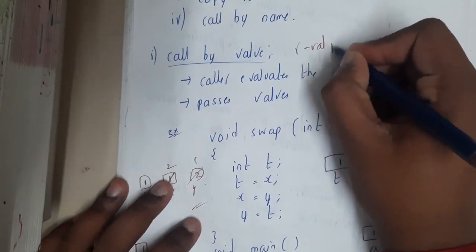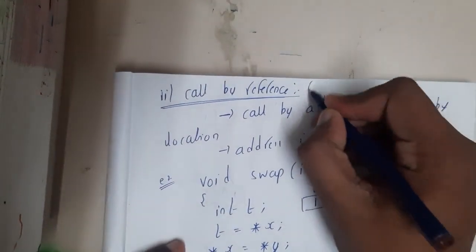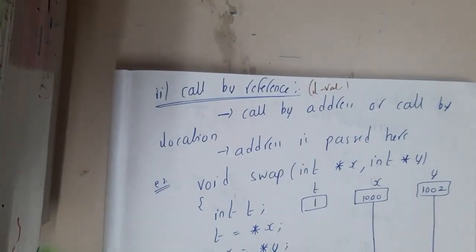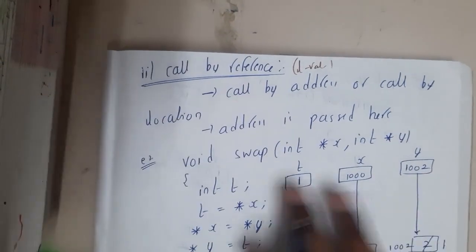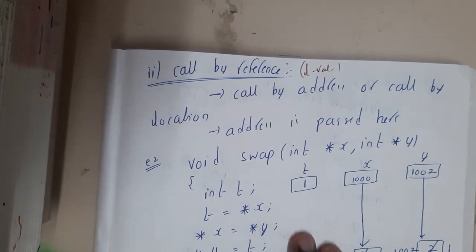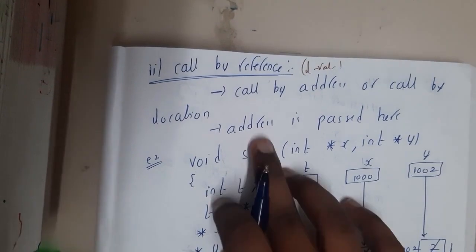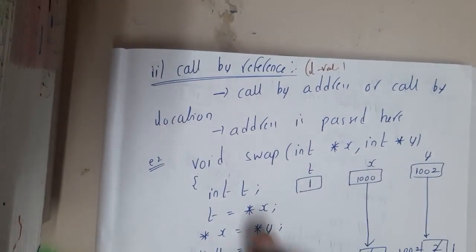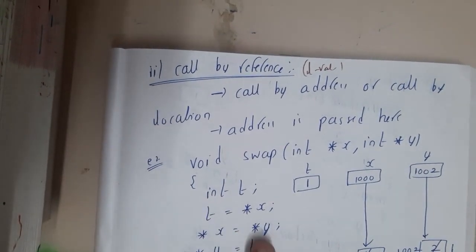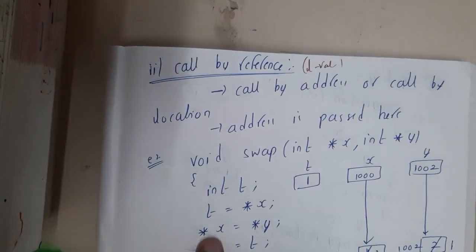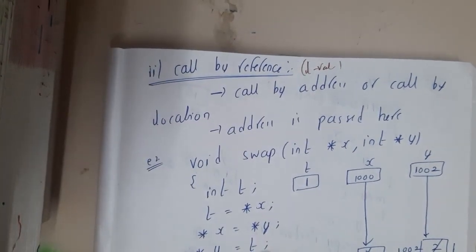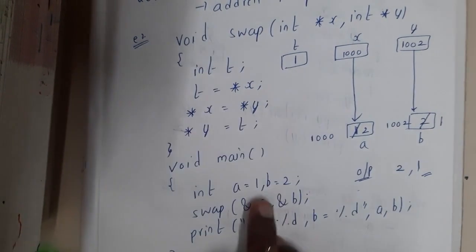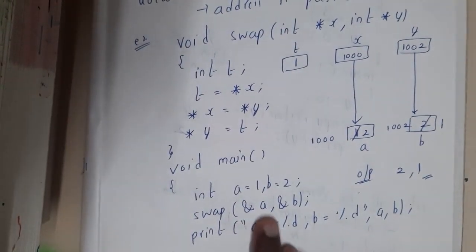In call by reference, l-value is passed — you pass the location (address). It is also called call by address or call by location. The function signature is: void swap(int *x, int *y) { int t = *x; *x = *y; *y = t; }. In main: int a = 1, b = 2; swap(&a, &b); print(a, b).